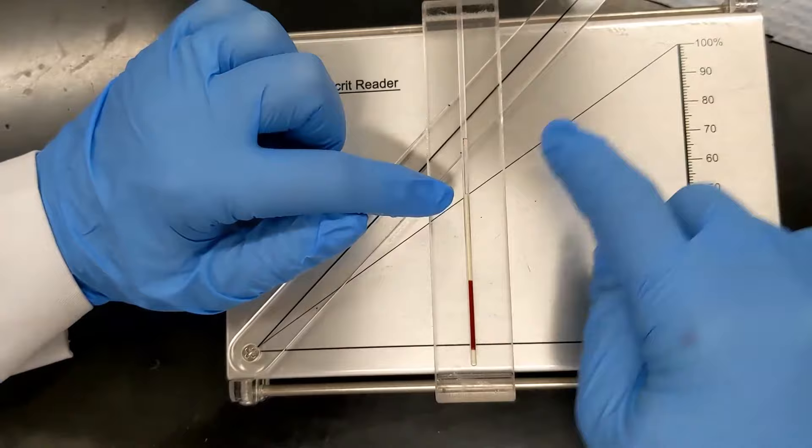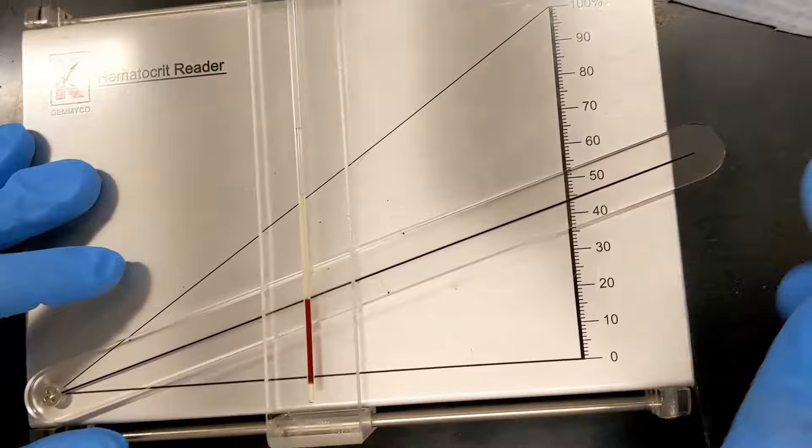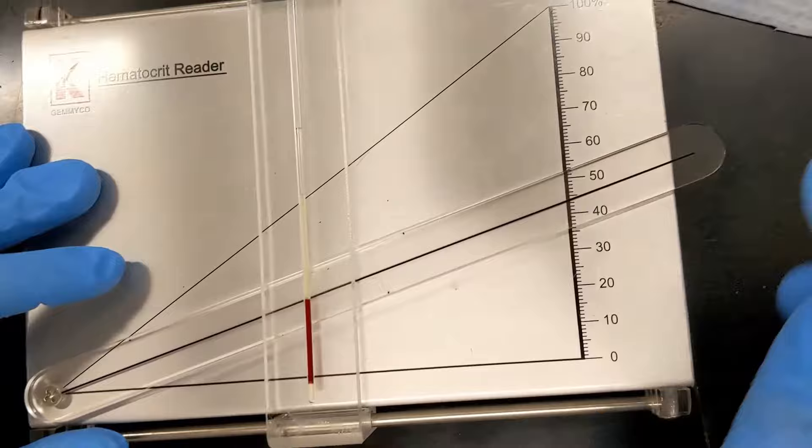Now you're going to use this ruler section placed on the top of your red blood cells, and that reads the hematocrit. So for our patient, it's exactly 44%.